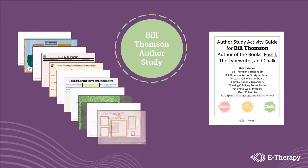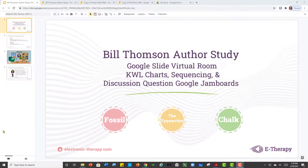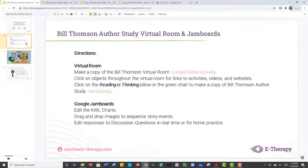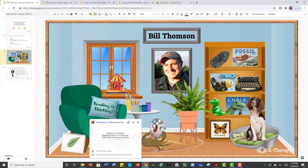although several of the resources and lessons can be adapted for younger or older students. This comprehensive resource has two main components: the Bill Thompson virtual room with 17 resource links and the companion 21-page hyperlinked activity guide PDF.